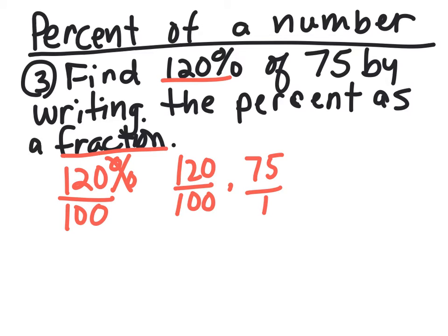Now we can cross simplify or multiply across. This time we're going to cross simplify and take a factor of 25 out of both. 25 out of here would be 3, and 25 out of here would be 4. Now we can multiply across.